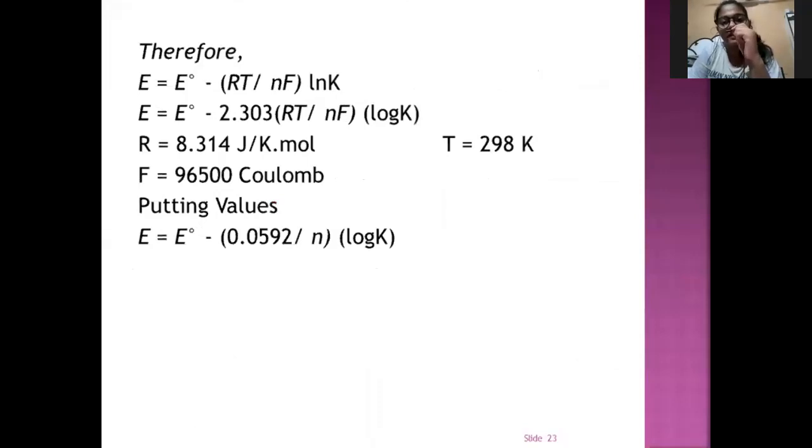Therefore we can say E equals E naught minus RT upon NF lnK. Putting the values, the equation finally we get is E equals E naught minus 0.0592 upon N into log K.